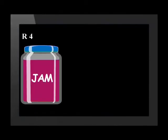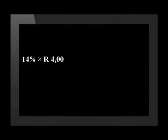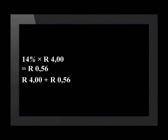Let's see how VAT is calculated on a single item. The price paid for a tin of jam from the supplier is R4.00. This is the price before VAT is added, known as the price excluding VAT. As VAT is charged at a rate of 14%, the calculation is as follows: 14% multiplied by R4.00 equals 56 cents. This is the VAT amount added to the price. R4.00 plus 56 cents equals R4.56 — the price inclusive of VAT.